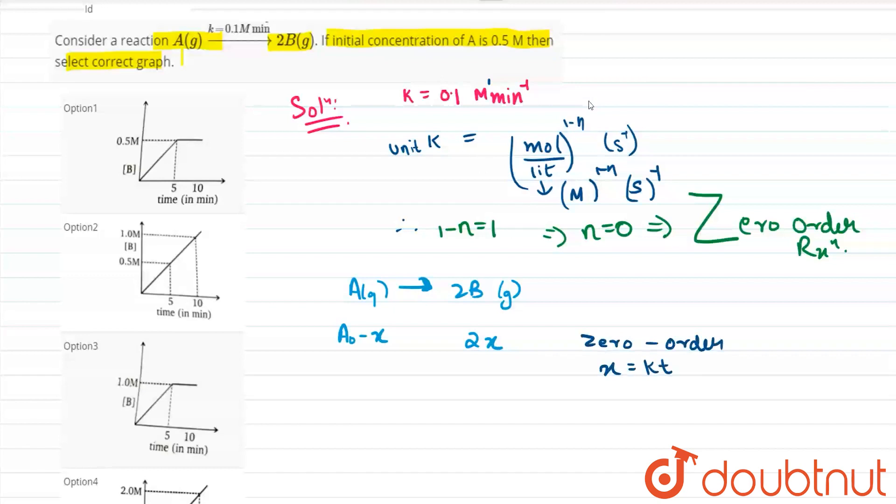If x equals kt so let us find out the value of x at time 5 because in every graph we can see that 5 is something to ponder upon. So what is the value of k? It is 1 by 10 and what is the value of t? It equals 5 so it equals 0.5.